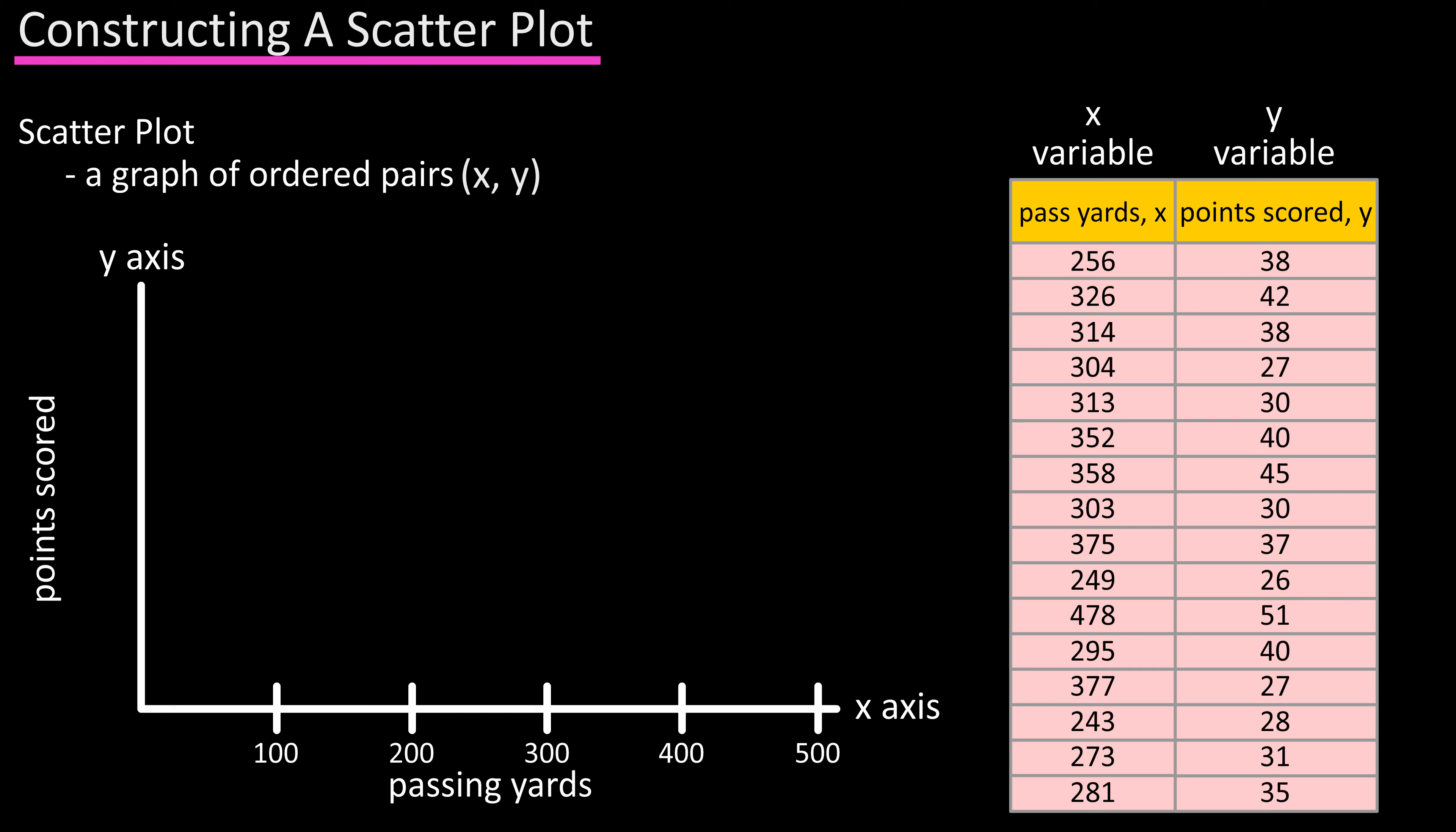Next, from the table find the highest value in the table for y points scored, which is 51. We can round up to 60 and mark that somewhere near the top of the y-axis. Then make five more marks of equal distances going down the y-axis, marking them 50, 40, and on down to 10.